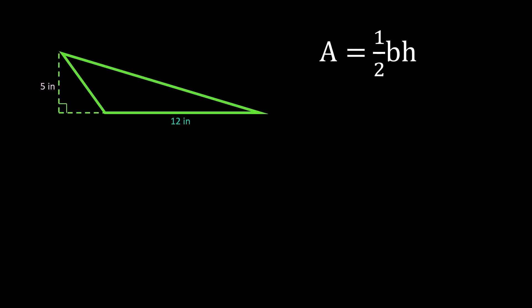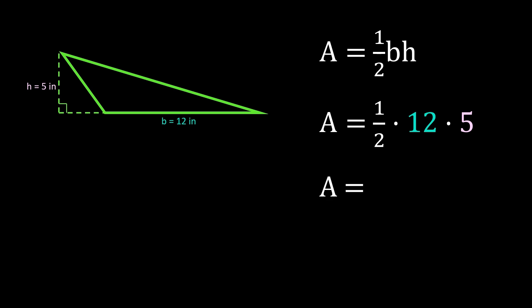Our formula for finding the area of a triangle is area equals one-half times the base times the height. In this triangle, our base is 12. And our height is always perpendicular to the base, so the height is 5 inches. So we'll have area equals one-half times 12 — substituting 12 in for b because it's the base — and then we'll substitute 5 in for h. 12 times one-half is the same as 12 divided by 2.